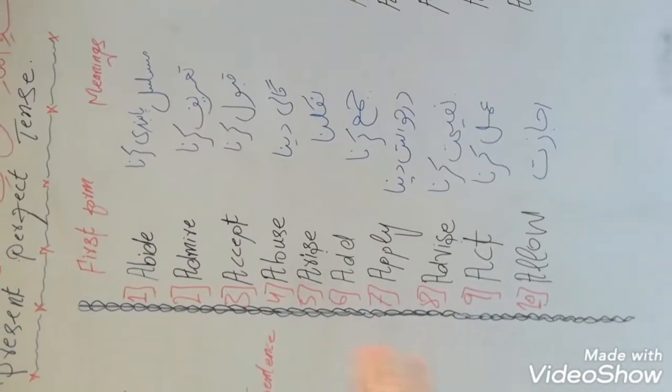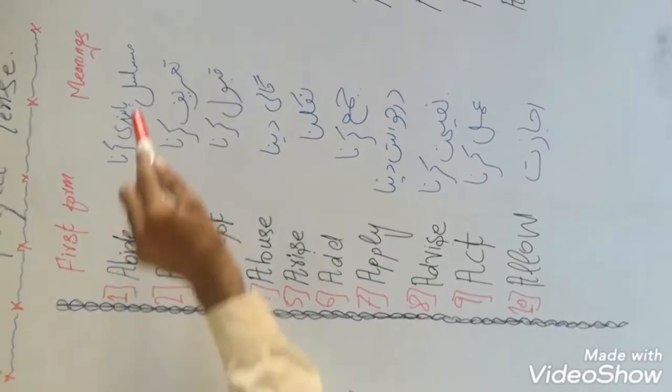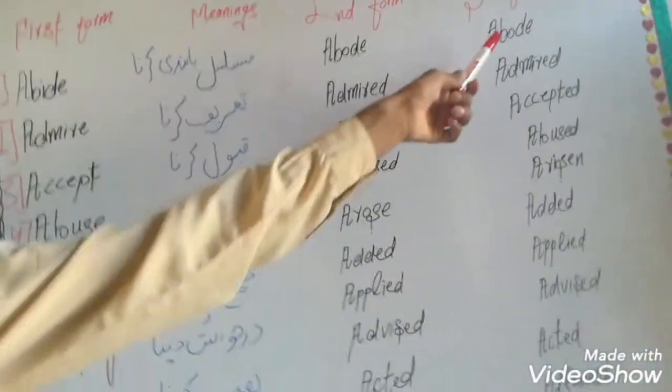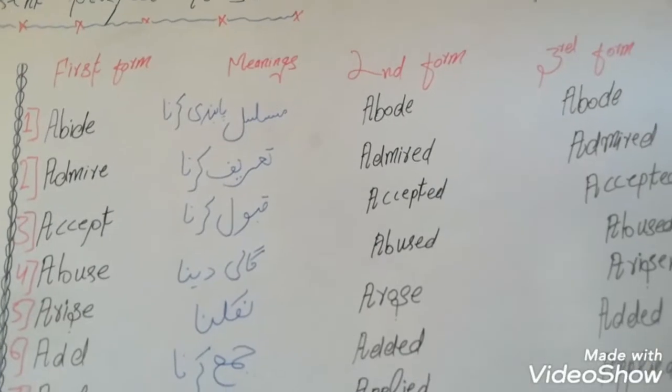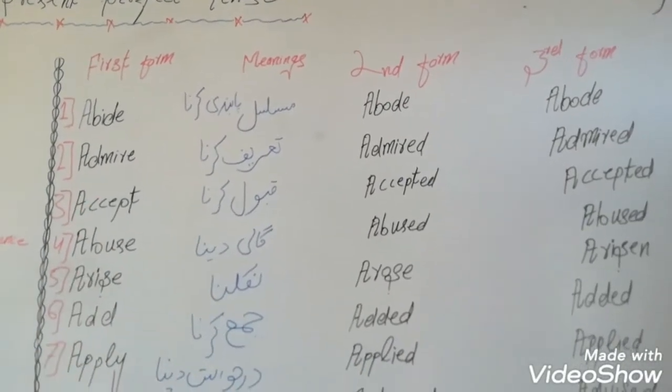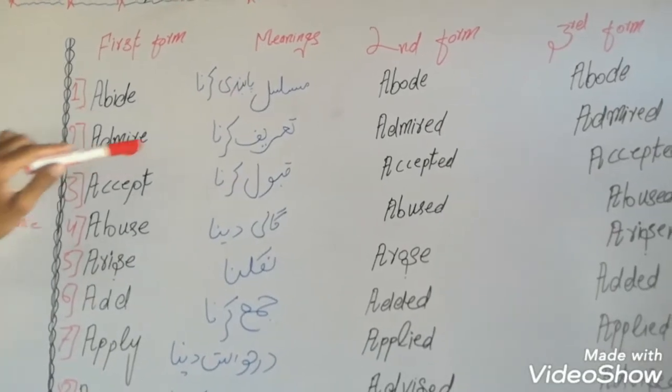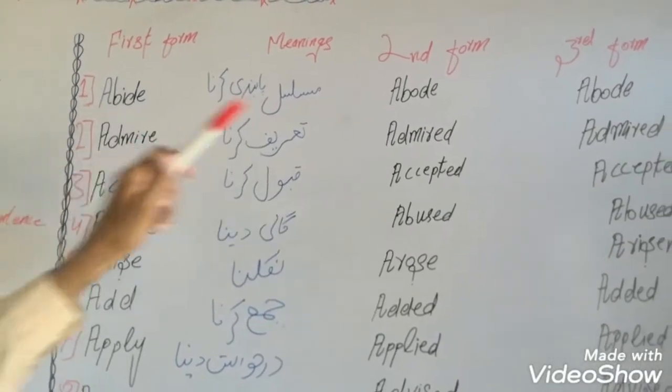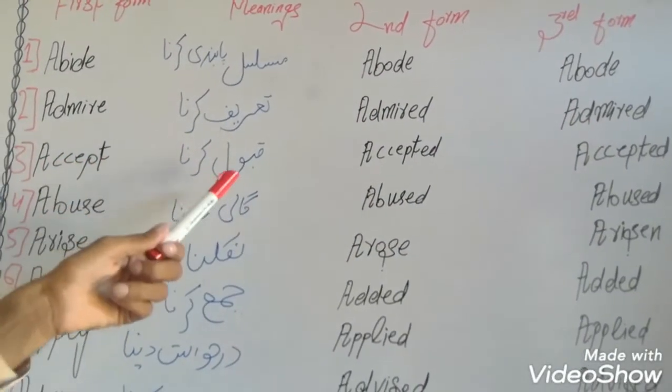We have an alphabetical order. For example, first is 'abide' - the second form is 'abode' and third form is 'abode'. After this, 'admire' - meaning to praise - second form 'admired' and third form 'admired'. 'Accept' - second form 'accepted' and third form 'accepted'.